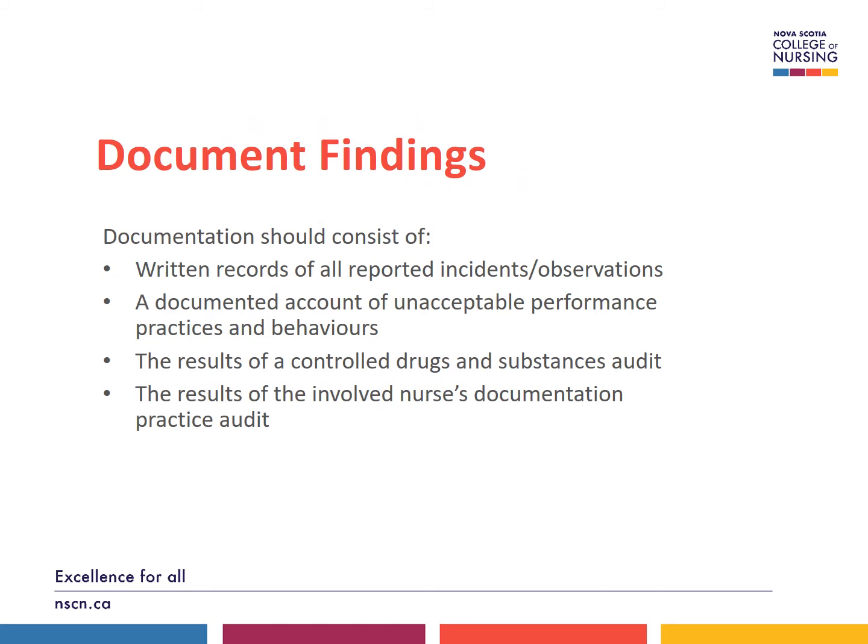Documentation should consist of written records of all reported incidents or observations, including names of persons involved, times, dates, what occurred, names of witnesses, and actions taken. Information should be focused on observations. A documented account of unacceptable performance, practices, and behaviors should also be noted. Appendix A in the Problematic Substance Use: A Guide for Managers document offers signs and symptoms of actual or potential PSU and is not an exhaustive list. Note that many symptoms can be associated with other pathologies. Documentation of the results of a controlled drugs and substances audit and the involved nurse's documentation practice audit will also need to be reviewed.